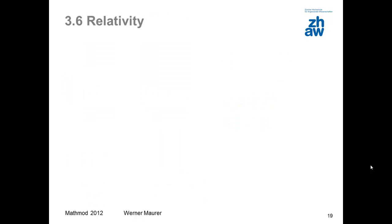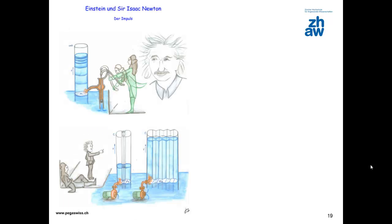A liquid representation can also be used in relativity theory. In the top picture, we see Newton pumping momentum into a body. In principle, the velocity can increase indefinitely with the momentum. The energy needed per momentum increases with the velocity. This is why the momentum that Newton can convey into the body per stroke gradually decreases. Einstein explains to Newton what happens when the velocity approaches the speed of light. Conveyance of momentum is also conveyance of energy, so the mass increases, as does the cross-sectional area of the vessel. Thus, the momentum pumped into the vessel leads to hardly any increase in velocity.